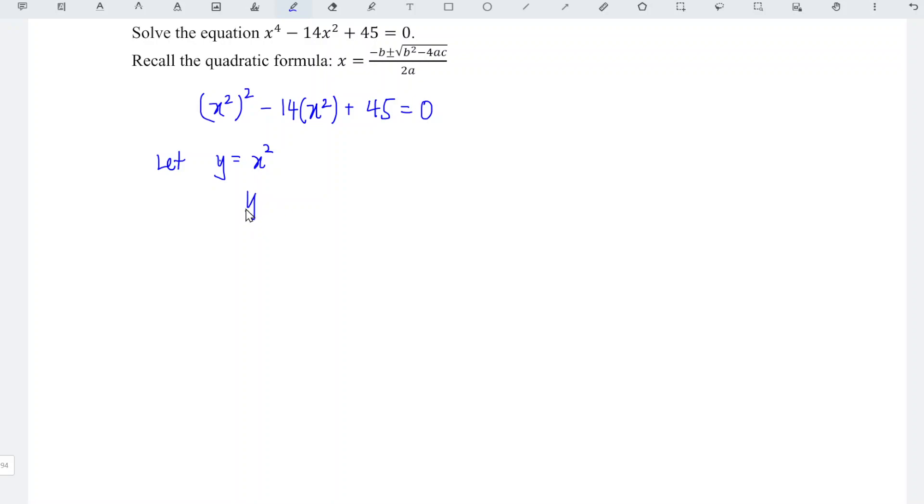This gives us y squared minus 14y plus 45 equals 0. This is the form of a quadratic equation, which means we can apply the quadratic formula.